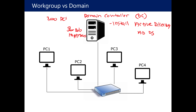It sends that request through the network up to a domain controller. The domain controller authenticates those credentials and says yes, that is the right username, that's the right password, and Bob can log into PC1. But his account does not live in the Security Account Manager SAM database — it now lives on the domain controller in the Active Directory software and is managed from there. If Bob were to quit and I needed to disable his user account, I would do that from the domain controller. If he forgets his password, I would reset that from the domain controller. Everything about his user account is managed in the Active Directory software on the domain controller, not on the local machine.